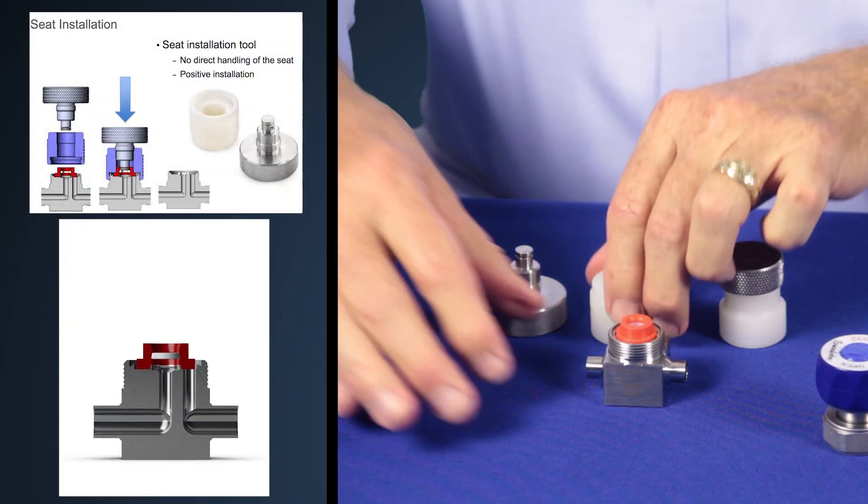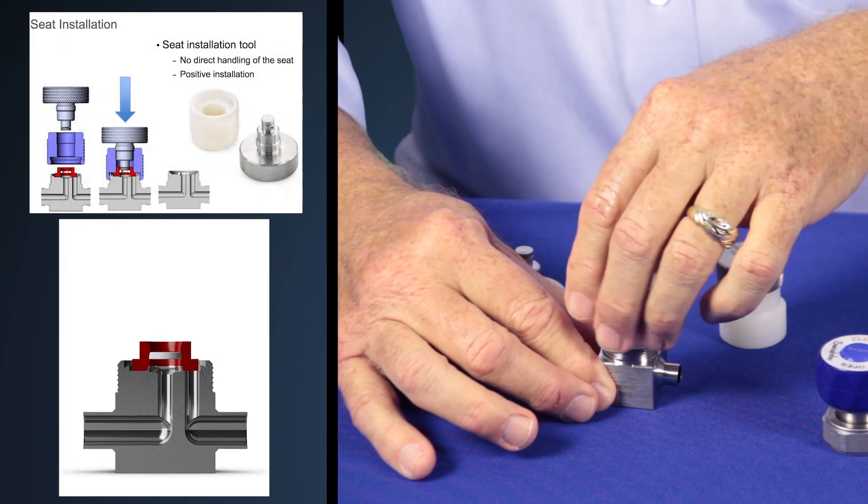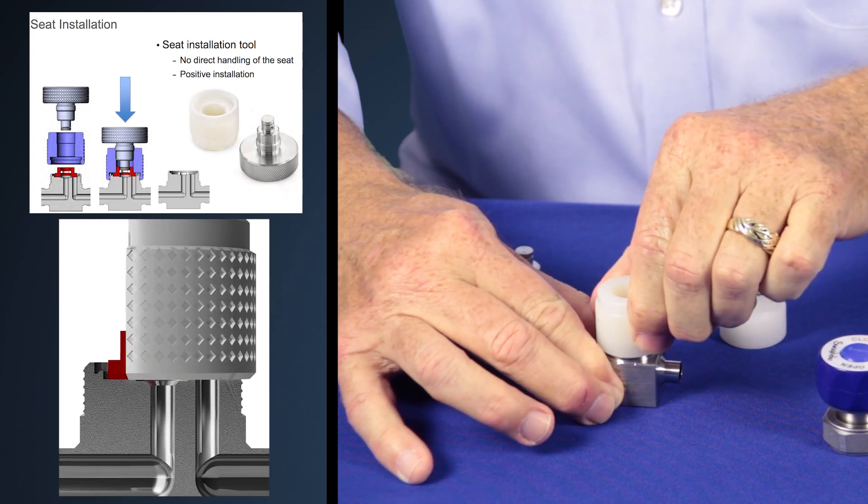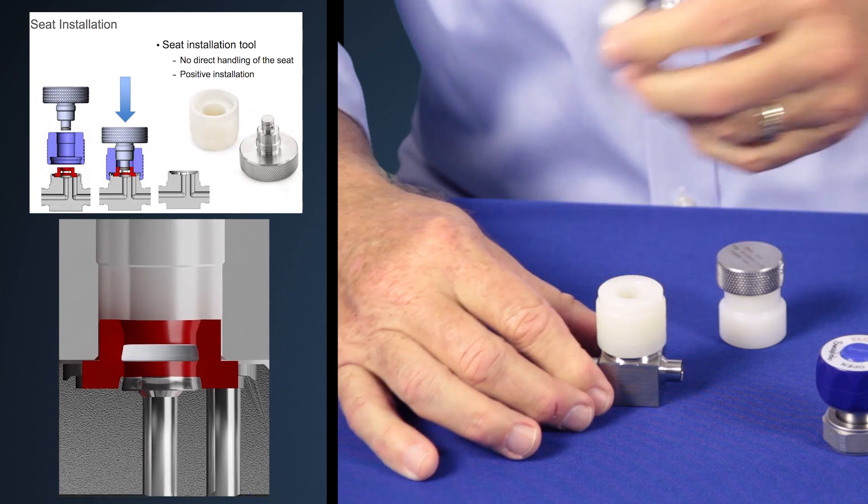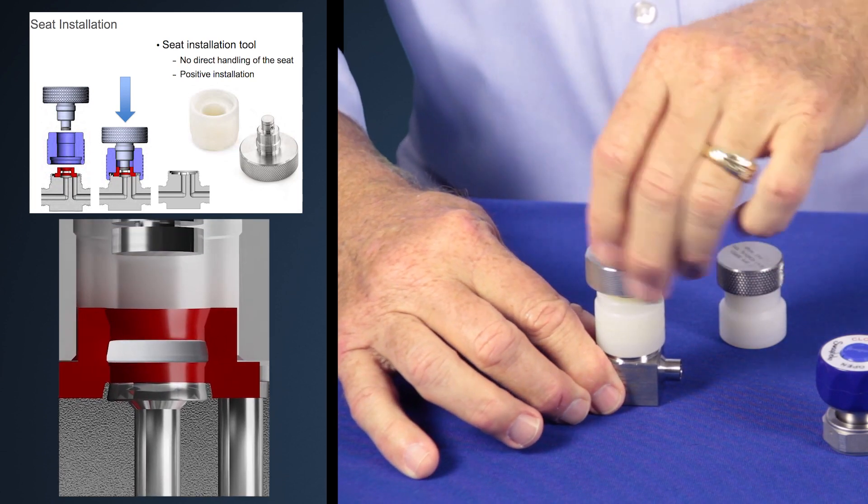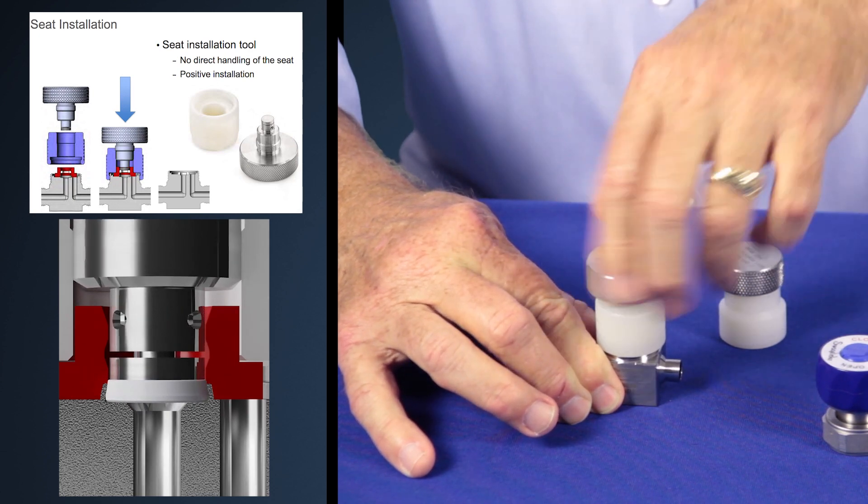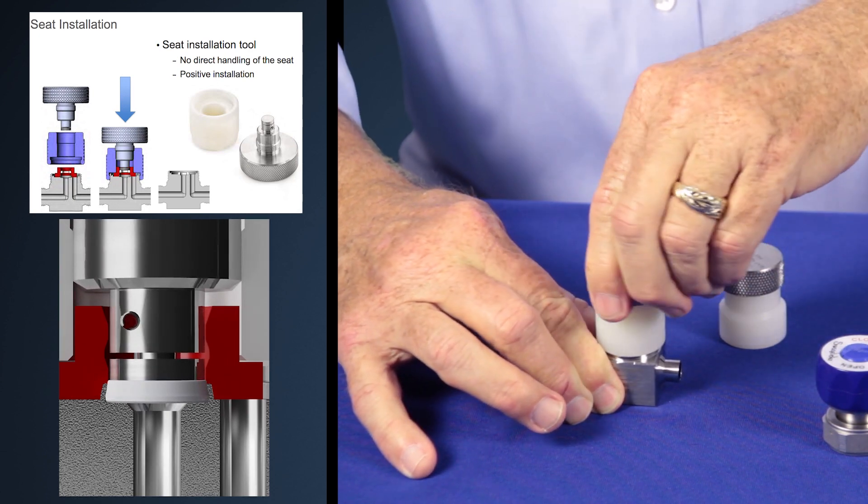Now you're ready to attach the seat installation tool which actually comes in two halves. Attach the first half and make sure that it seats against the body, then attach the driver nut. As you're screwing it down, you'll screw it down until it seats the seat into the body.